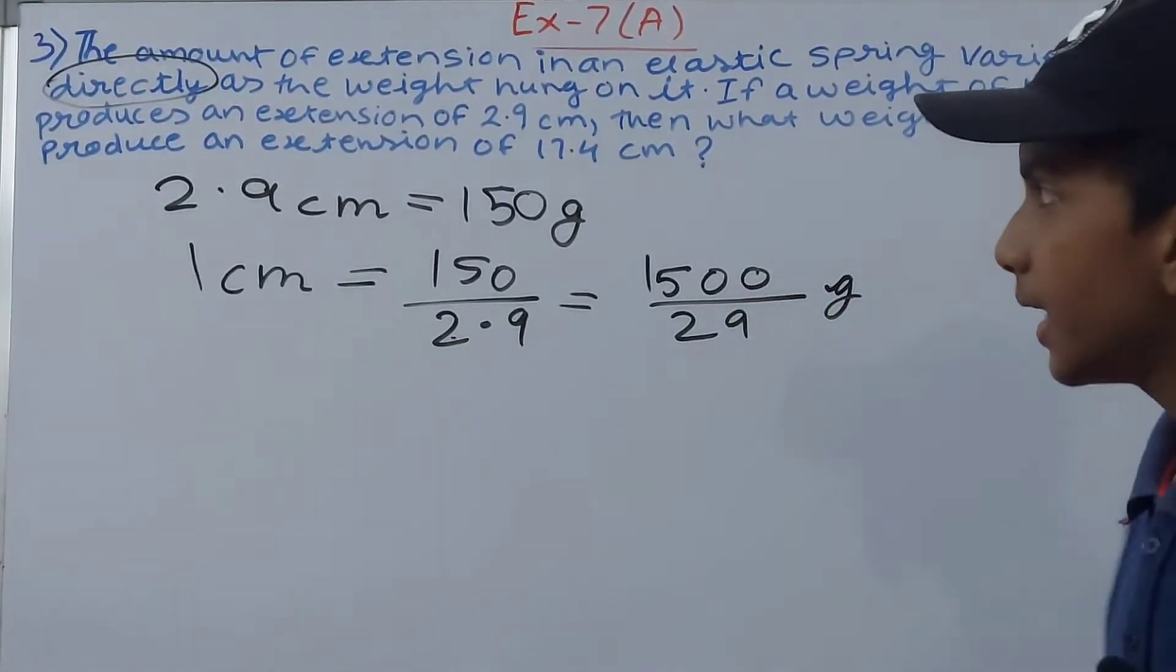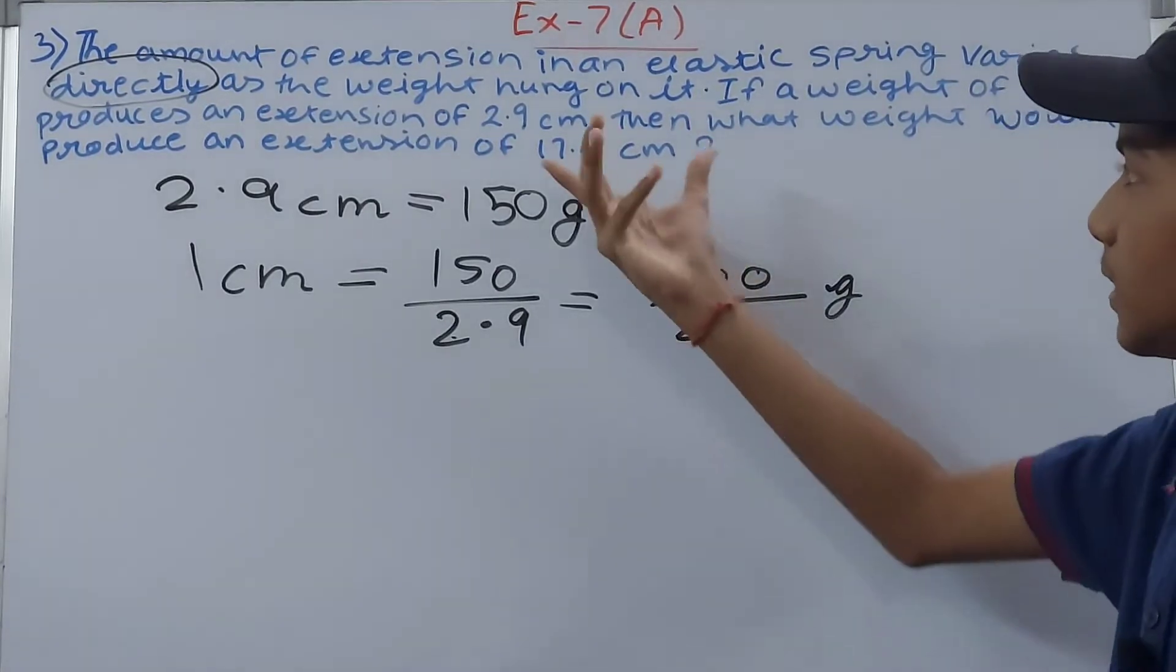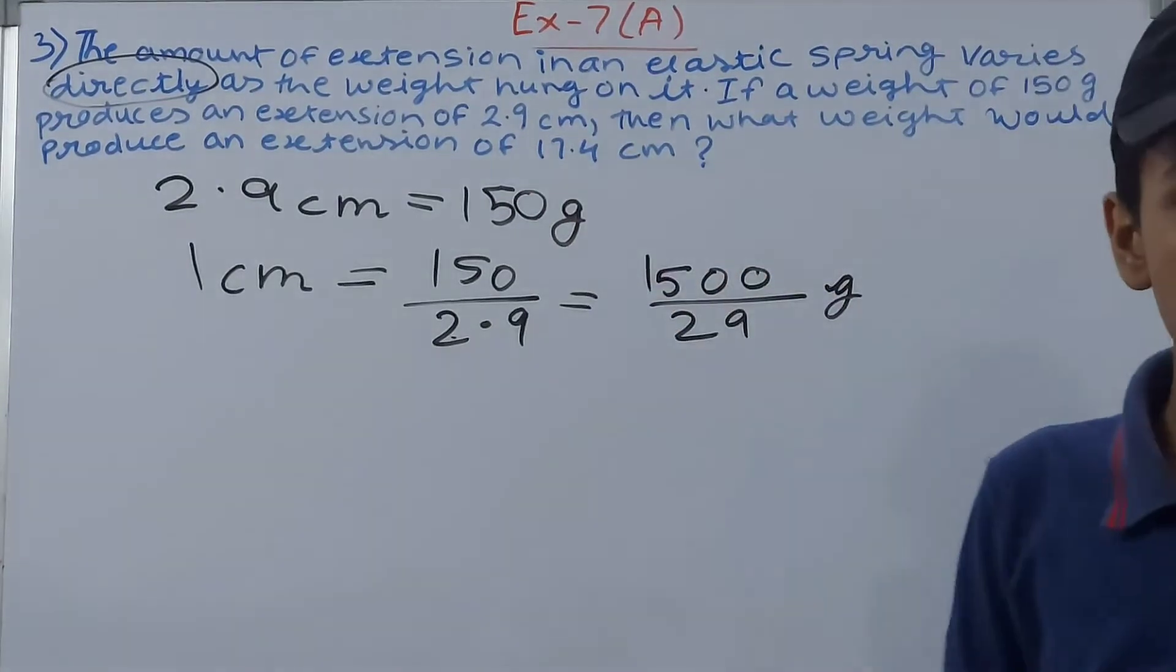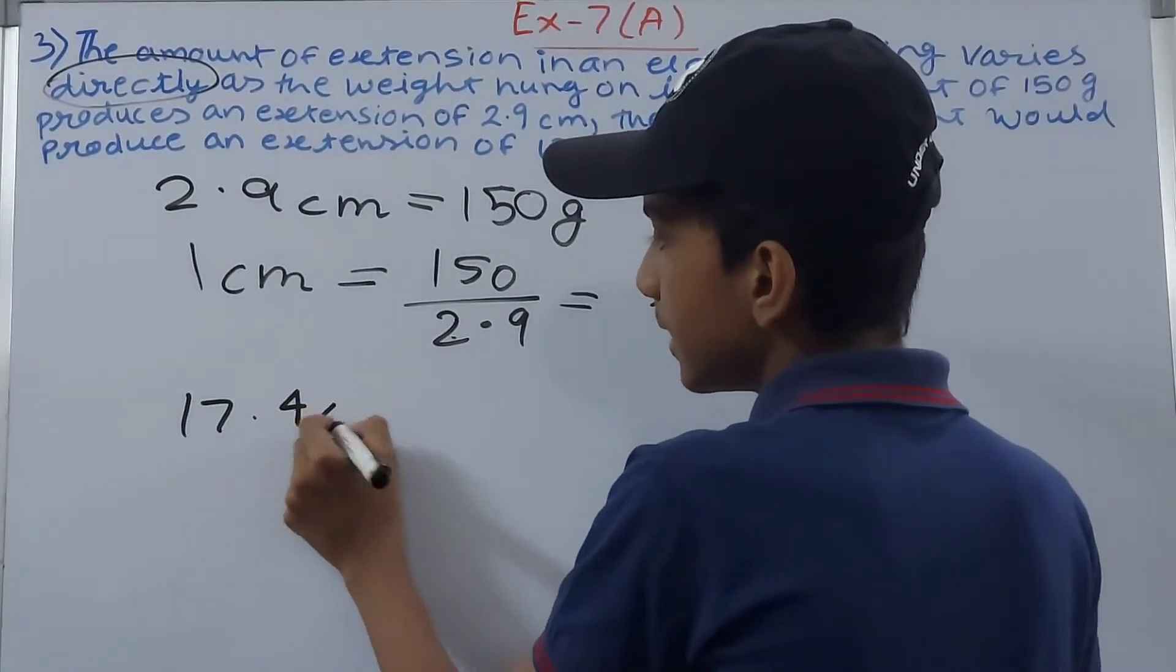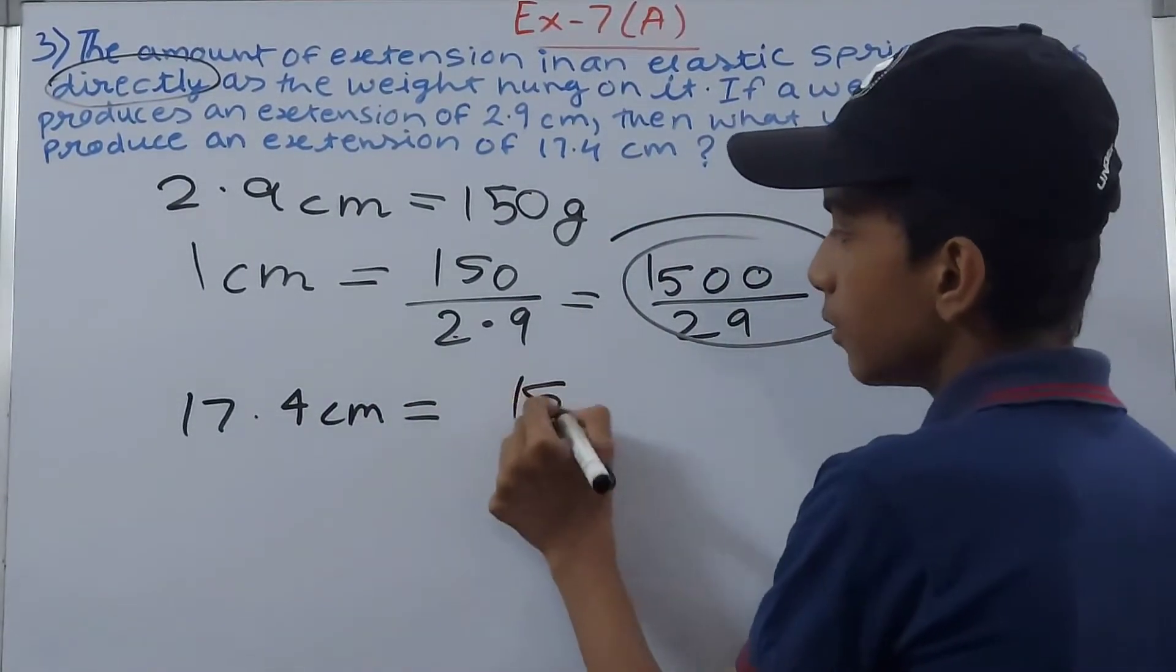I won't solve it for now. Then next, what weight would produce an extension of 17.4 centimeters? So 17.4 centimeters equals this multiplied by 17.4.